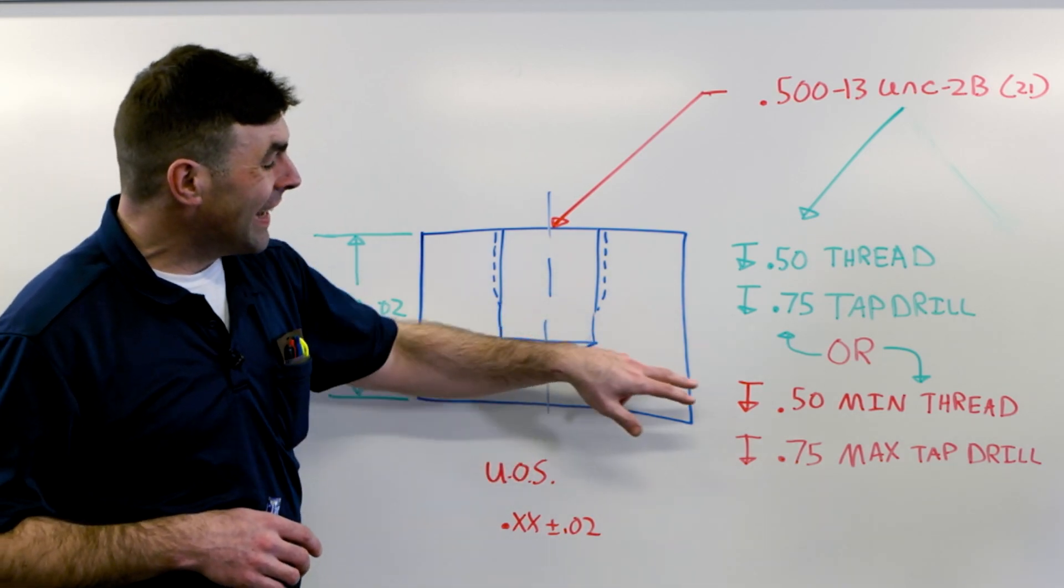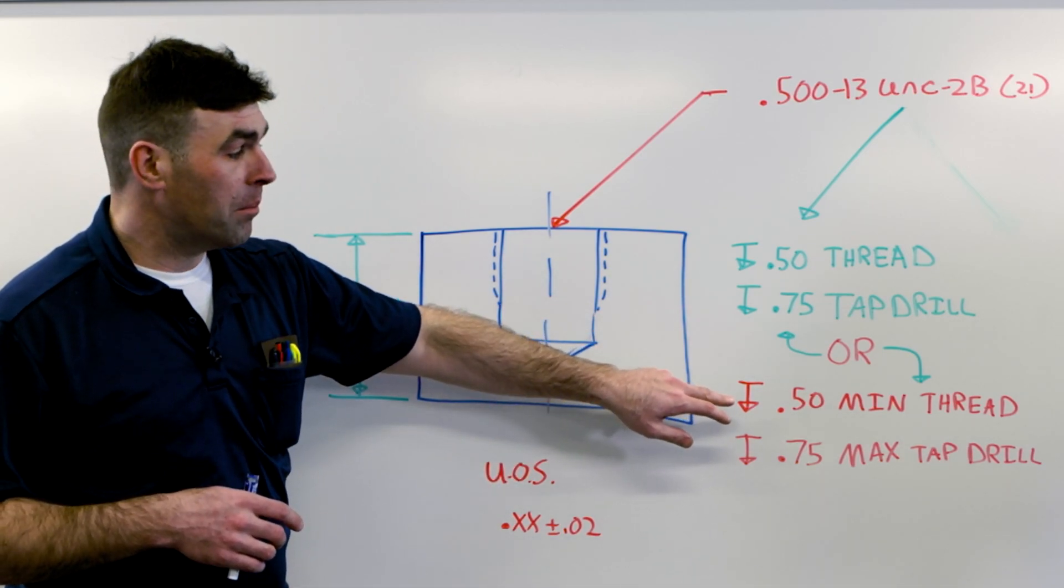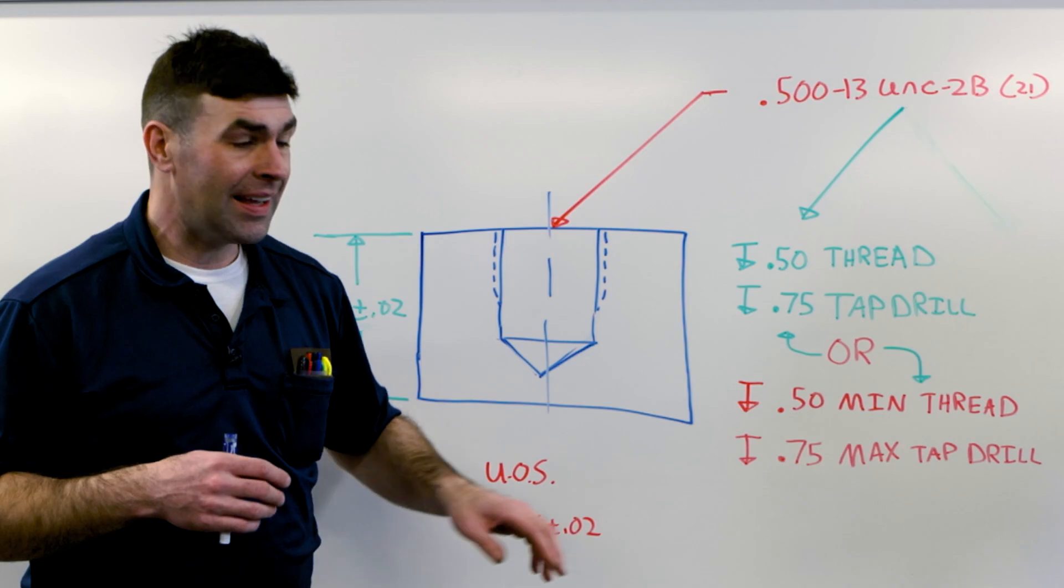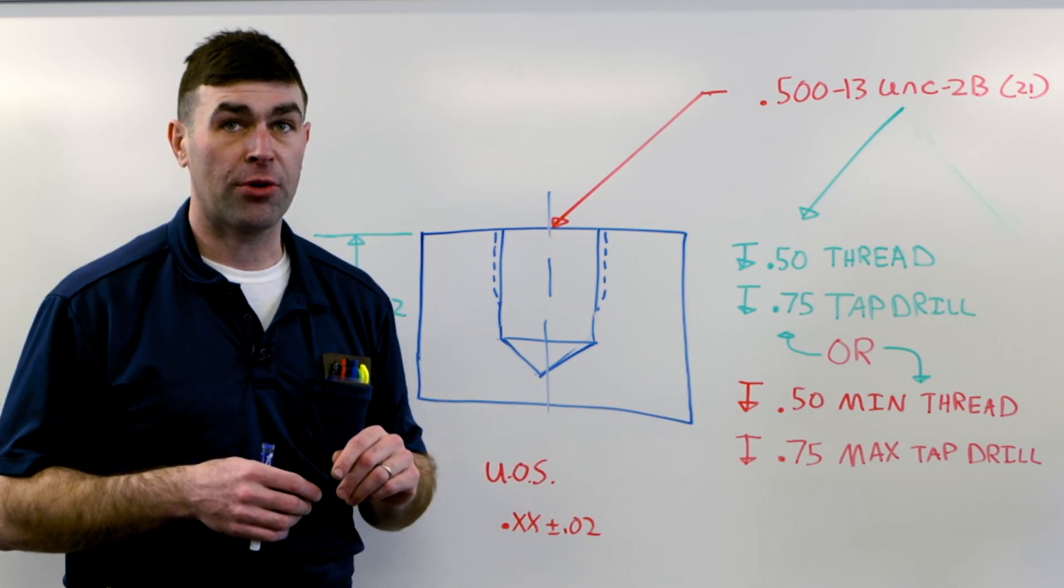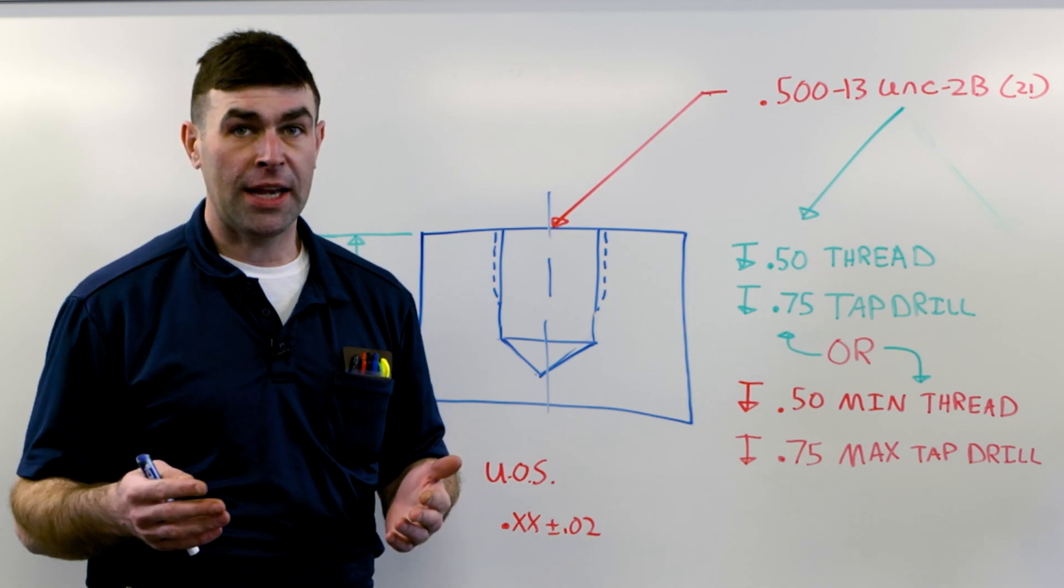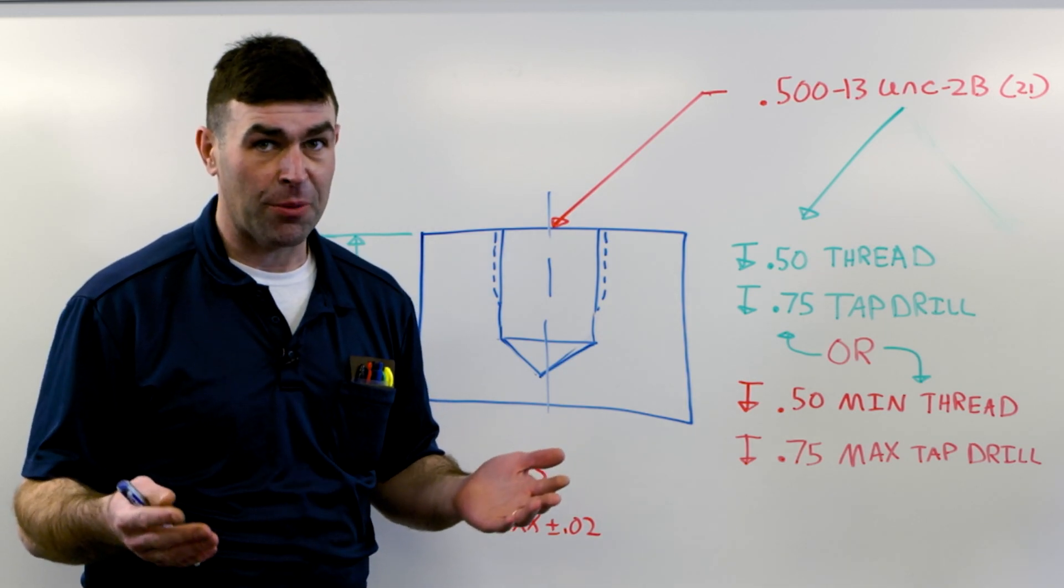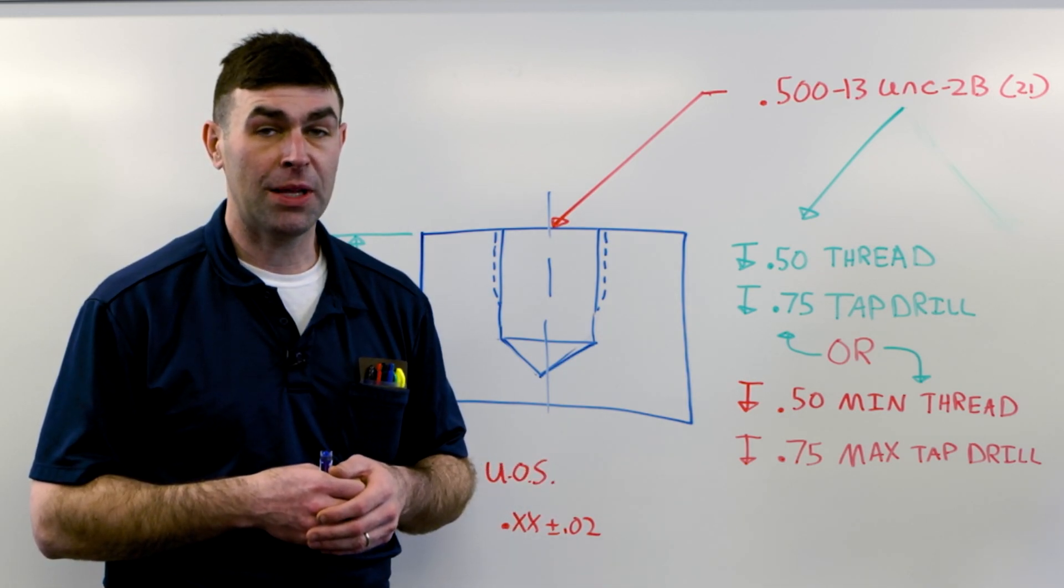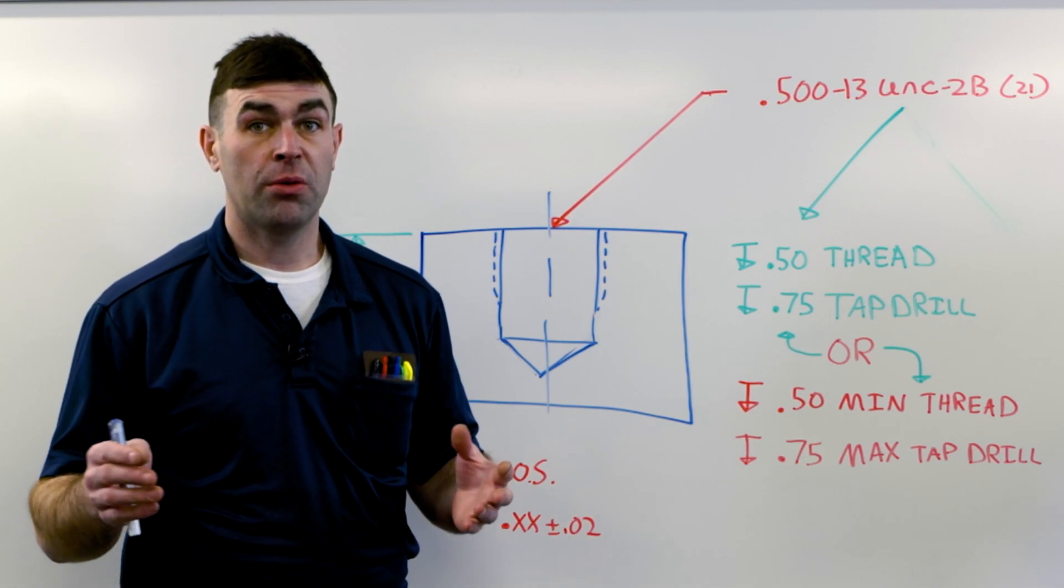And that better way is to specify the minimum full thread and the maximum tap drill. In this way, you're getting away from the plus or the minus, this range of places the thread and the tap drill can be, and giving a functional requirement.